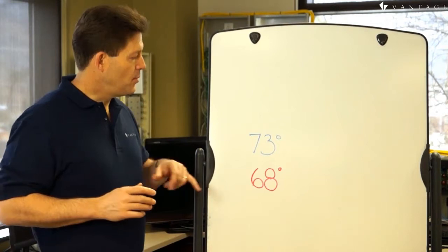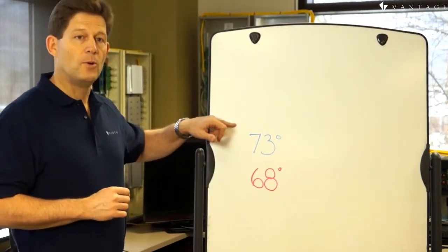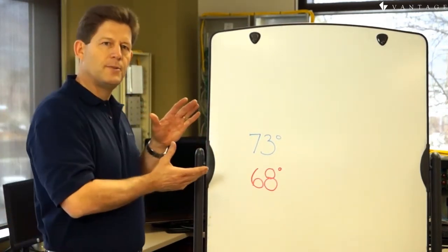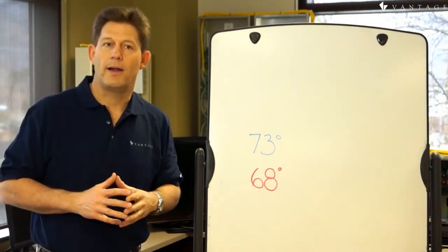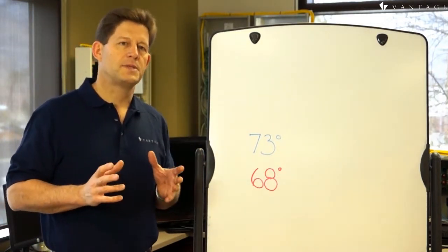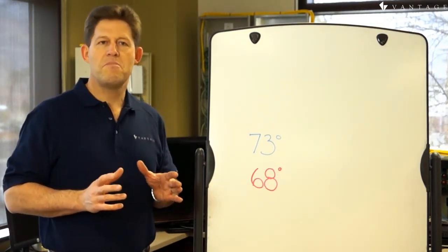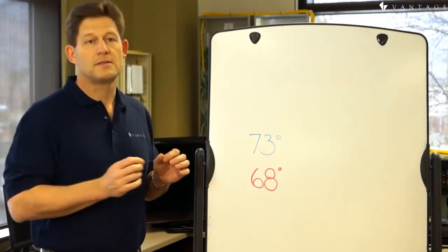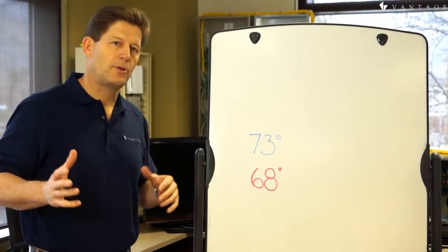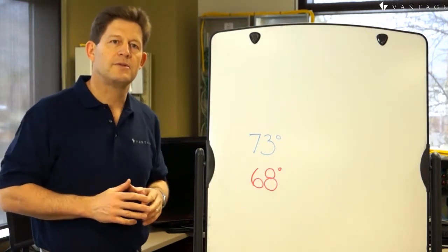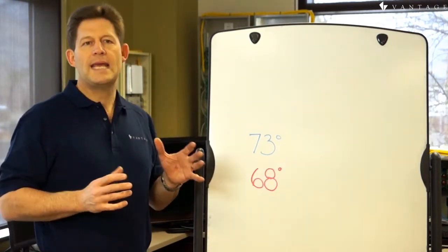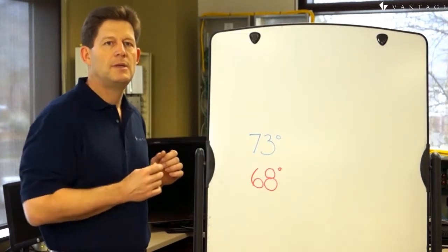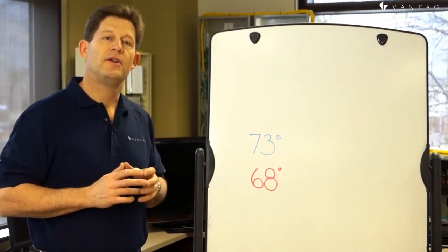A heat set point will always be lower than a cool set point; otherwise there would be a temperature range in which heating and cooling are both required. In fact, many thermostats enforce a minimum separation between these set points, sometimes fixed and sometimes variable, typically two to three degrees difference, that keeps us from setting the heat and cool set points too close.